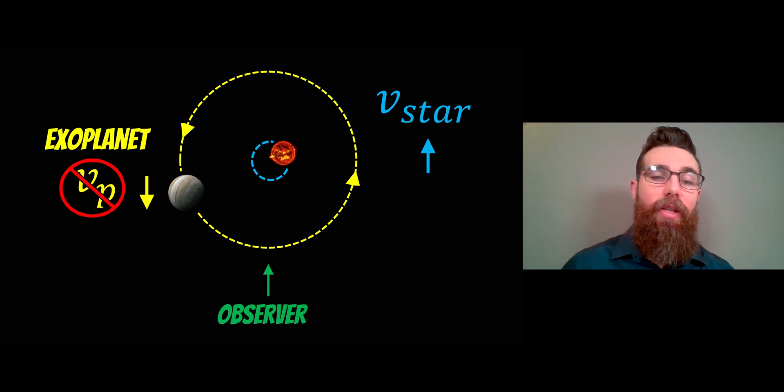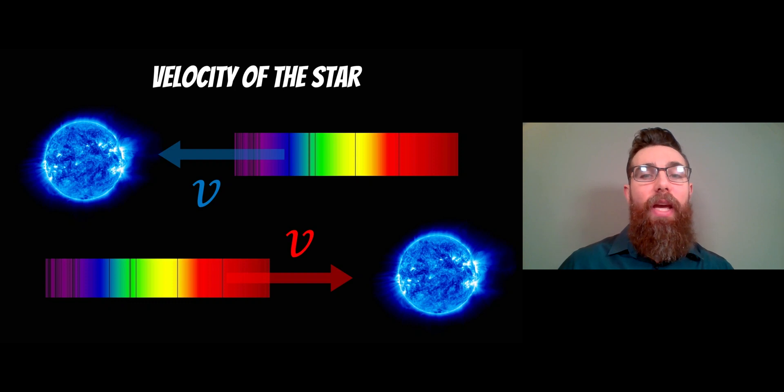What happens is as the planet is orbiting around, the star has a bit of a wobble and we can measure that using the Doppler shift. So we can measure the velocity, the radial velocity of that star but not of the exoplanet. We get the velocity of the star by looking at the shift in the light coming from it due to the Doppler effect.